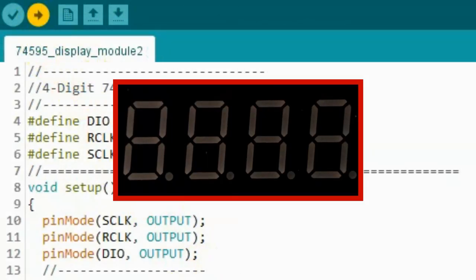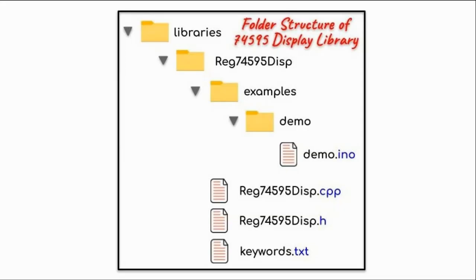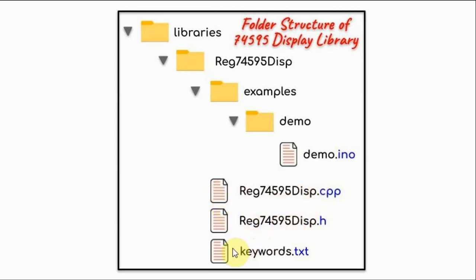Now we run the sketch and observe the output. The next step is to create a library for the module. The library folder structure is shown here. Within the Arduino libraries folder, we create our library folder named register_74595_display. Within this folder, we have the examples folder containing the demo sketch, as well as the source file, the header file, and the keywords file.